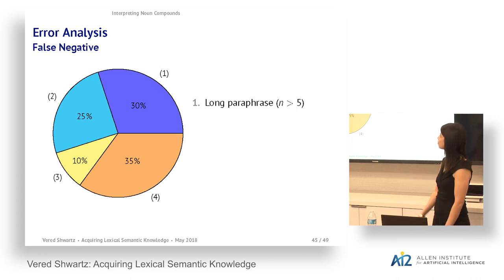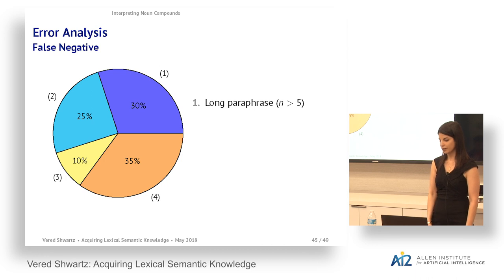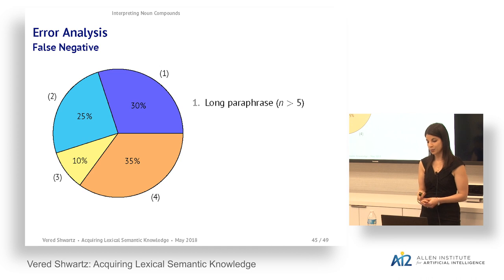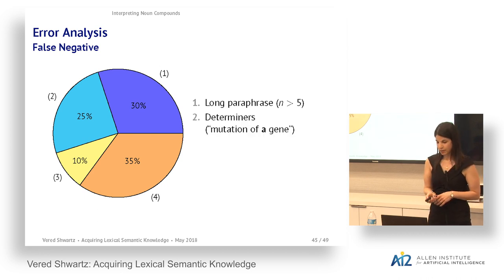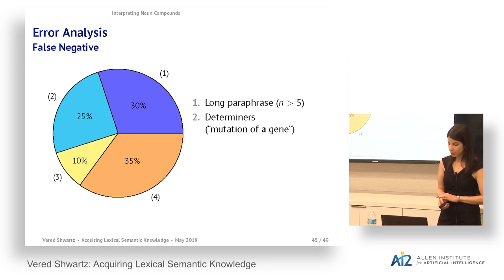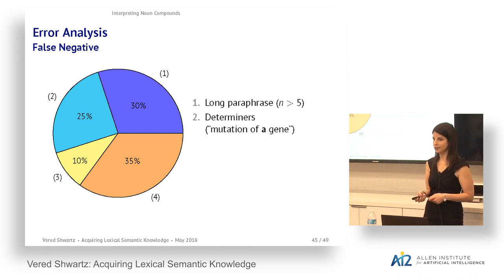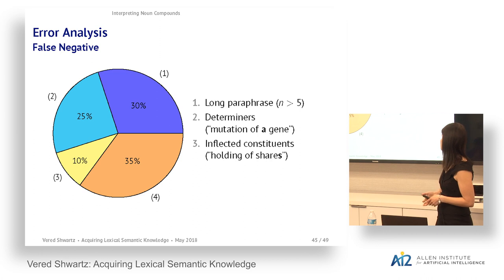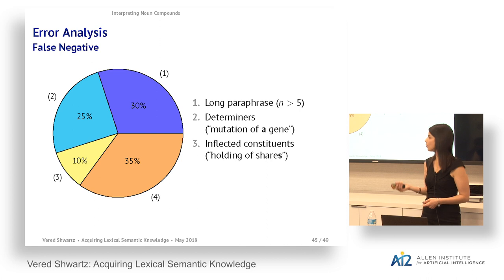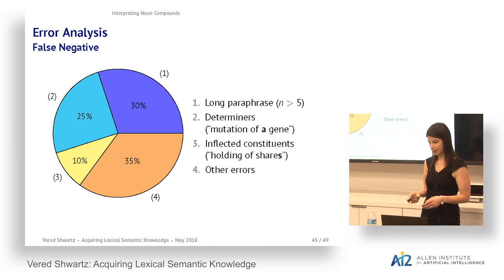For false negatives, 30% of gold standard paraphrases were too long for our model — we were constrained to five words using Google n-grams. About 25% contained determiners we had removed (e.g., predicting 'mutation of gene' instead of 'mutation of a gene'), 10% involved inflected constituents (predicting 'holding of share' for 'shareholding' instead of 'holding of shares'), and 35% were other errors.